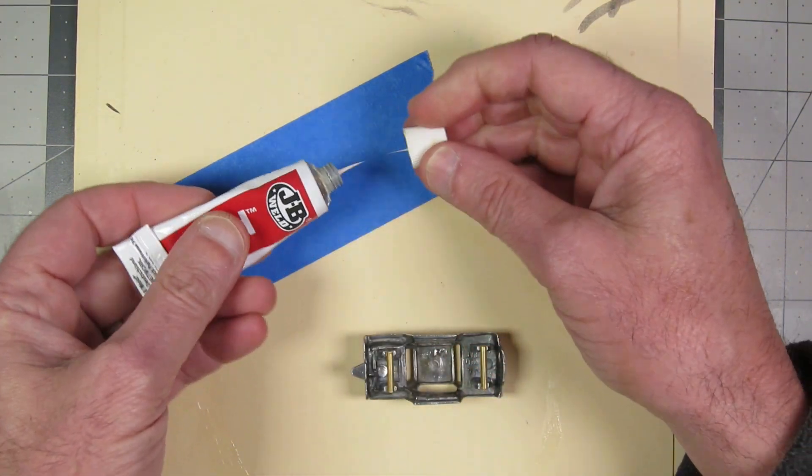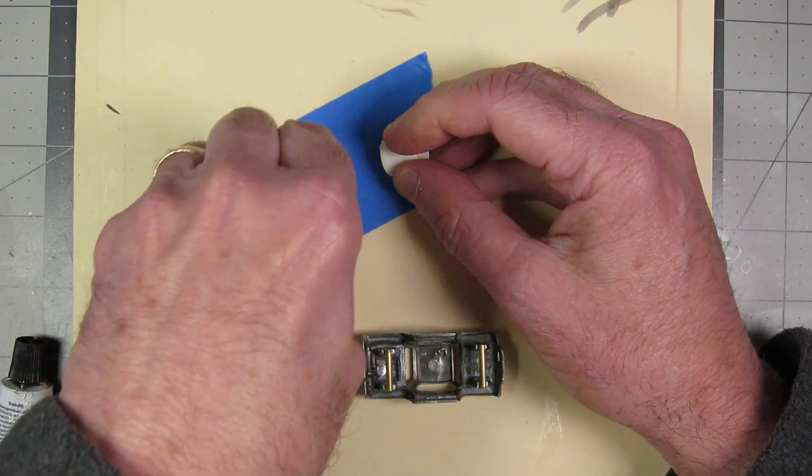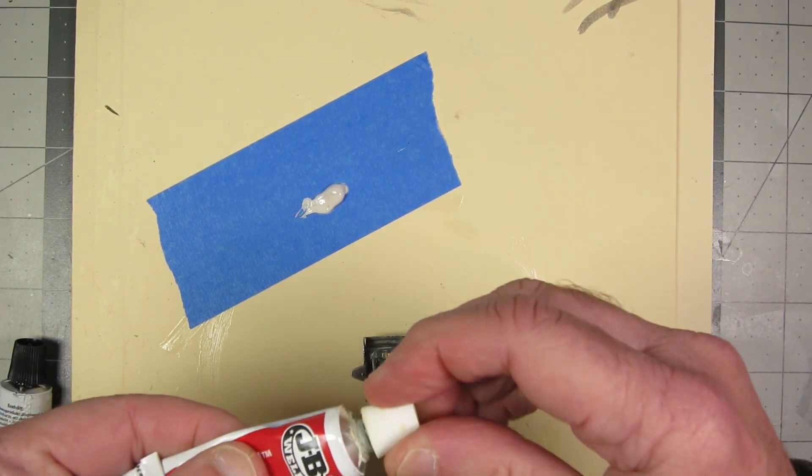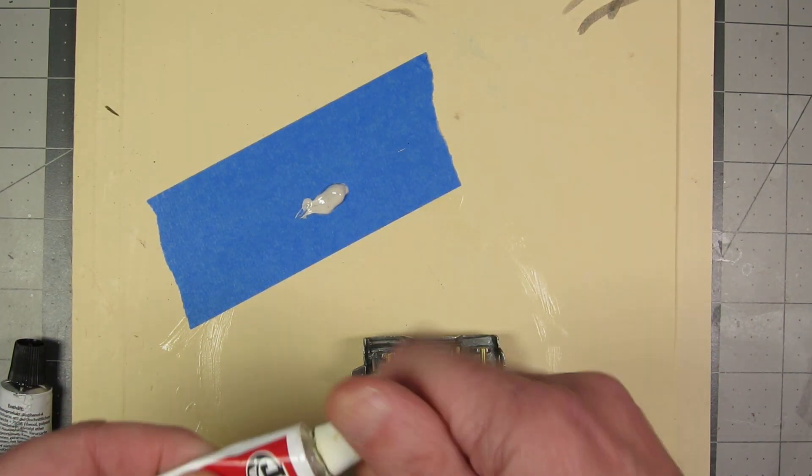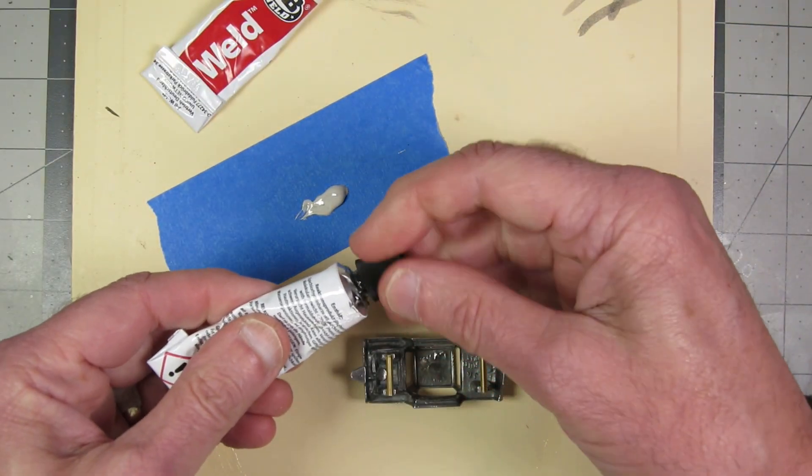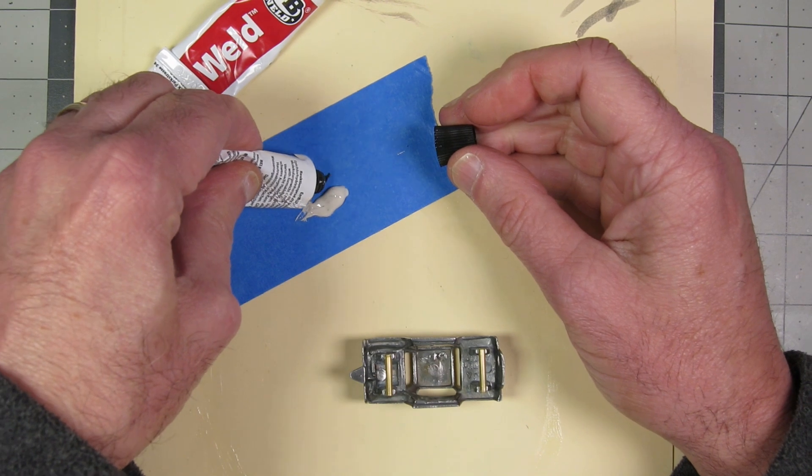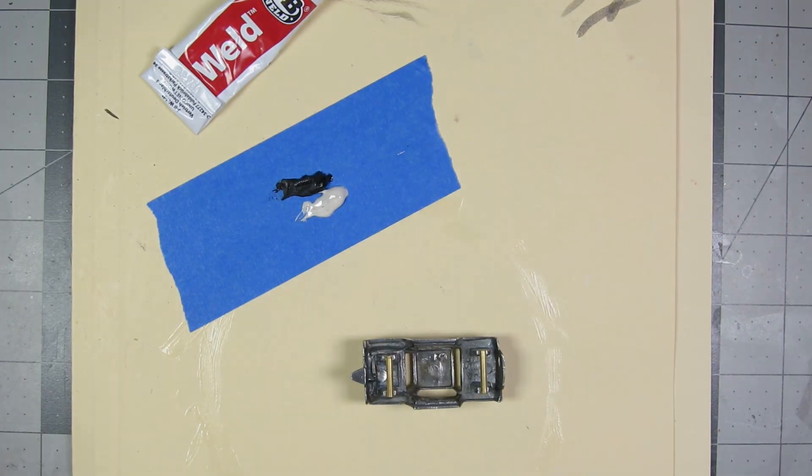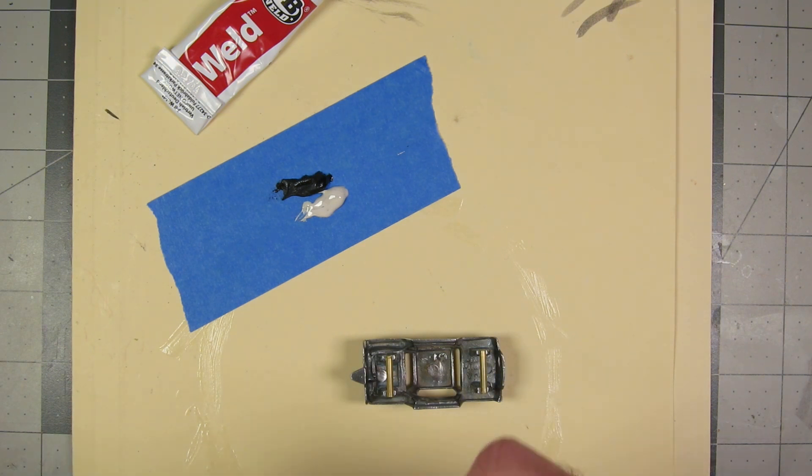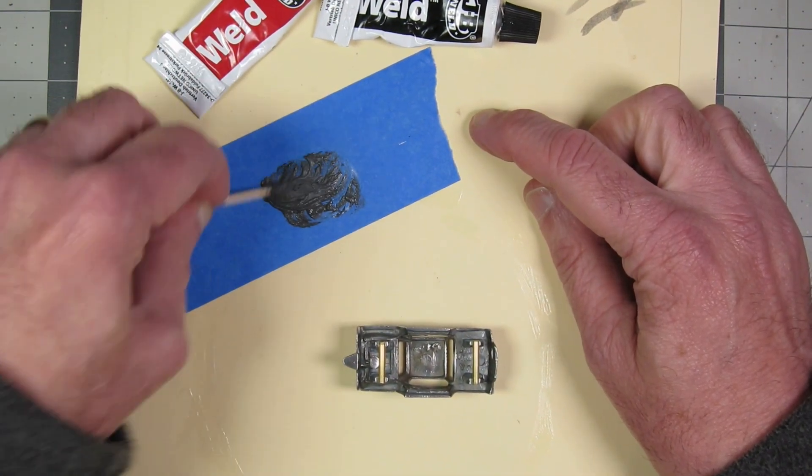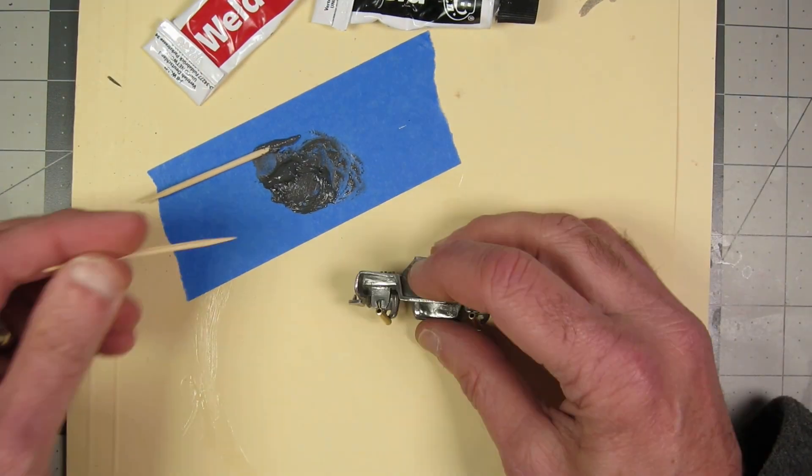What better excuse than to get out the JB Weld to use it to really keep them in place. And if you've never held a Tootsie Toys in your hand, you don't know how rough these darn little castings are. Some of them are better than others. And this one has some unique little issues to it. But they aren't very precise, is probably the right term for it.